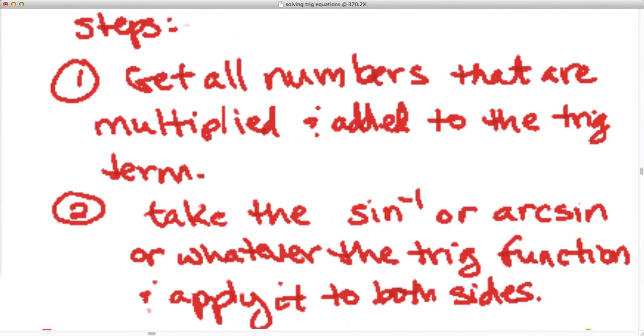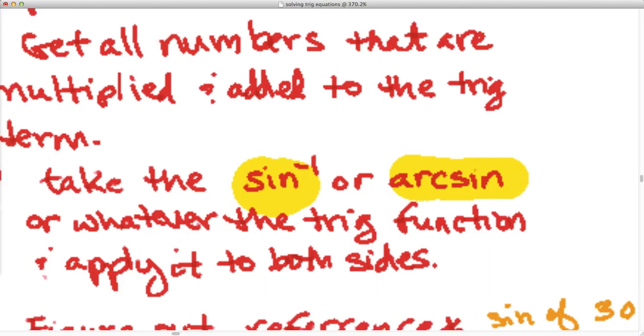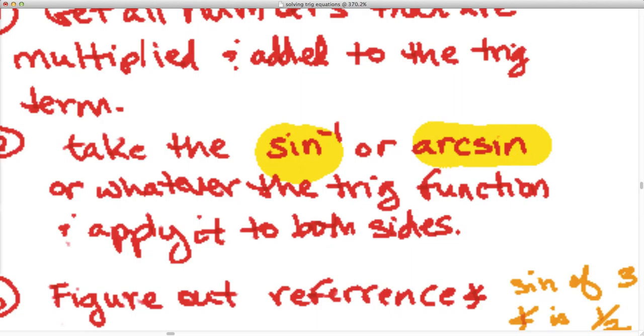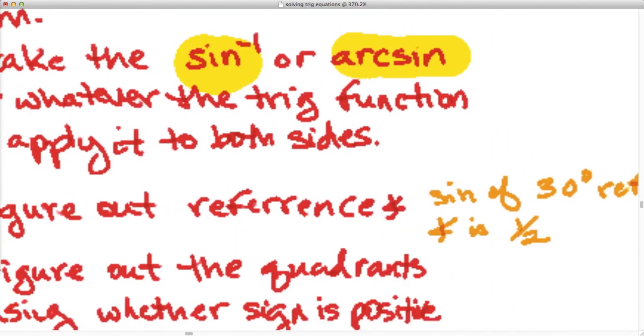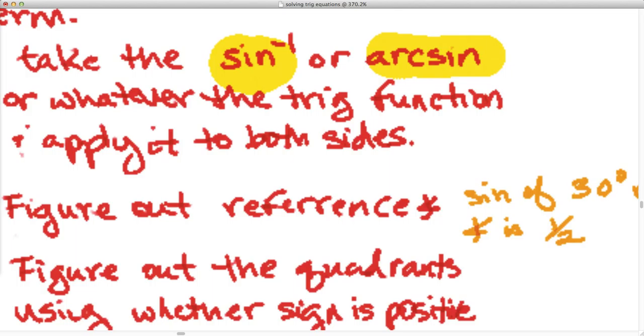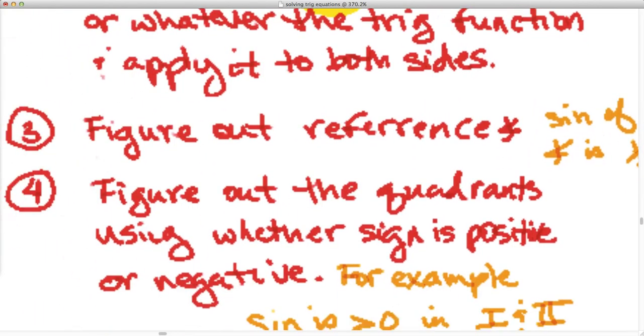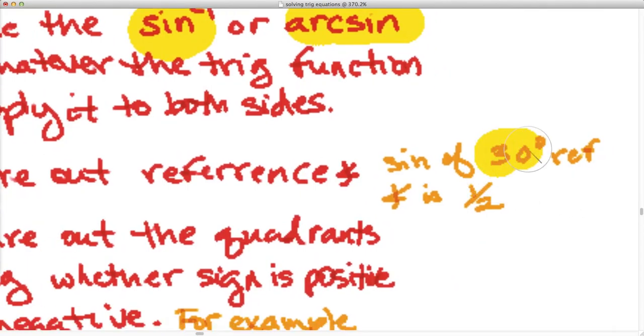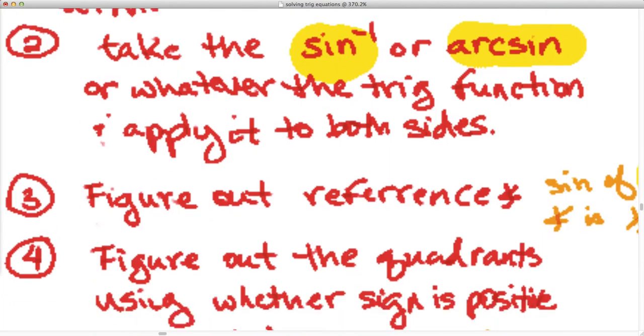Okay, so after you do that, you're going to take the arc sine of both sides, or the sine inverse however you want to write it down. And what that's asking is, okay, what angles indeed have the sine of one-half? In this case, to get the reference angle, you ask yourself what reference angle has a sine of one-half? If you do your chart or whatever you got to do, calculator, you'll find out that it's 30 degrees.